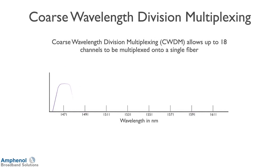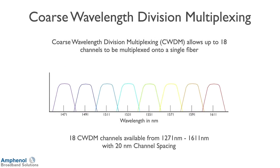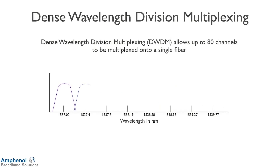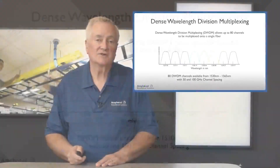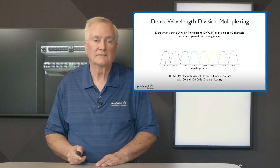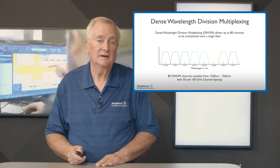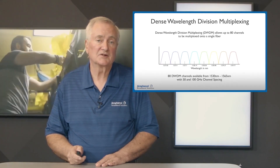That technology brings us to Coarse Wavelength Division Multiplexing, CWDM, which allows up to 18 channels to be multiplexed onto a single fiber. These 18 channels are available from 1271 nanometers to 1611 nanometers with 20 nanometer channel spacing. To take this one step further, we have Dense Wavelength Division Multiplexing, DWDM, which allows 80 channels to be put onto one single fiber, available from 1530 nanometers to 1565 nanometers with 50 and 100 gigahertz channel spacing — spaced very close together.